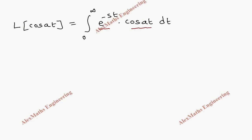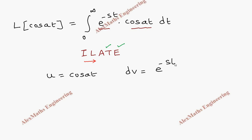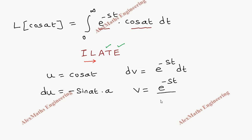Here we find the integration is the product of two different functions, so we are going to apply integration by parts. Using ILATE, we find two different functions: e^(-st) which is exponential, and cos(at) which is trigonometric. Whatever comes first in the ILATE order is taken as u, so u is cos(at) and dv is e^(-st) dt. From this, du is the differentiation, which is -sin(at) times a, and integrating dv gives v, which is e^(-st) divided by -s.